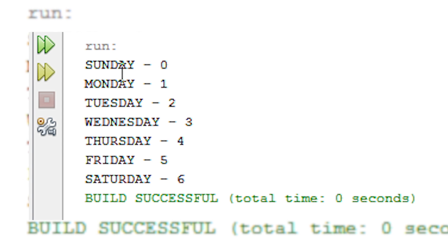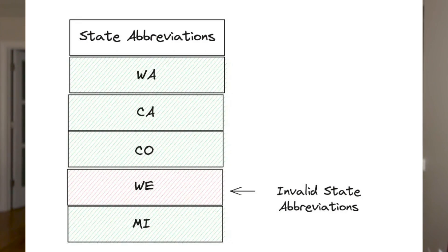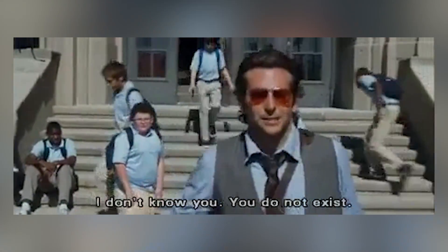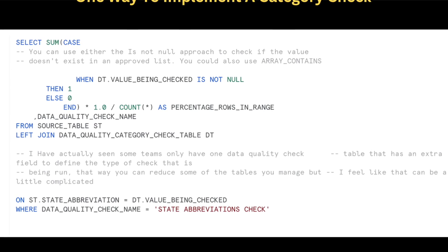Category checks apply when there are entities or values where you're expecting a certain limited set of values that never change. The clearest example I think of is state abbreviations — there's a limited set of valid values and you shouldn't get anything outside of them. As someone who has done a state abbreviation check, I've actually gotten states that were non-existent. I assumed the upstream system had a dropdown or its own data quality check, yet we still received four or five abbreviations that didn't exist coming in from the operational system.